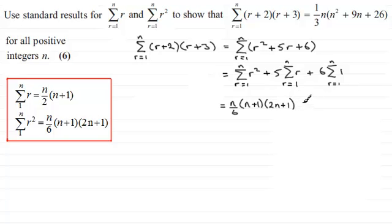And then we've got 5 times, this one up here, 5 times n over 2, so that's 5n over 2, then times n plus 1. And if we're summing 1 from r equals 1 to n, that's going to come to a total of n. Multiply it with a 6, and you get plus 6n.